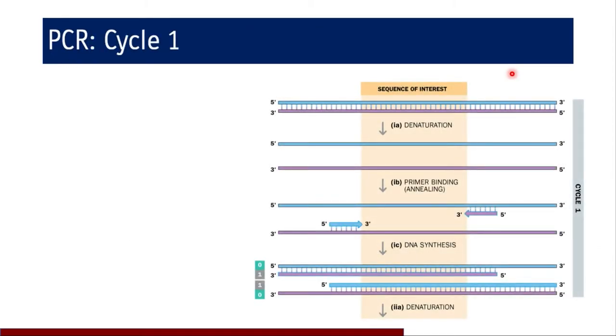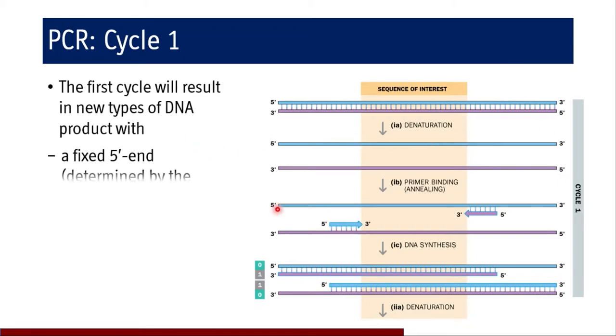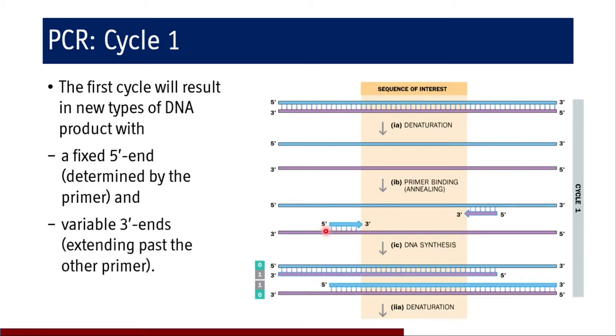In PCR cycle one, the first cycle will result in new types of DNA product with a fixed 5' end determined by the primer. The primer attaches and polymerizes from the 5' end to 3' end. Variable 3' ends extending past the other primer will be available in cycle one. After it extends with a fixed 5' end and variable 3' end, we will have many segments after cycle one finishes.